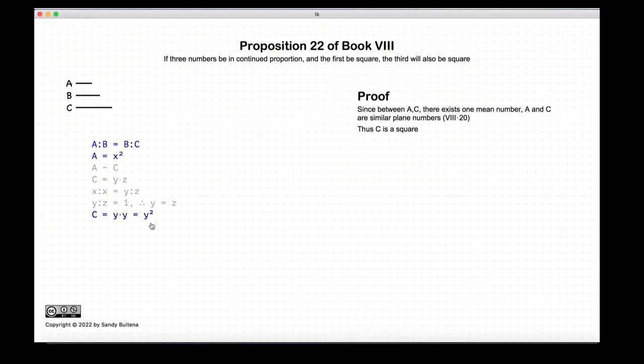So to repeat the proof, very simple one this time. We start with three numbers that are continuously proportional. If a is a square, then c is also a square.